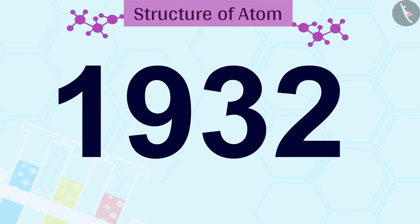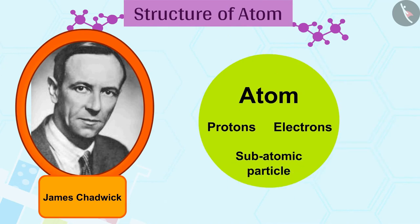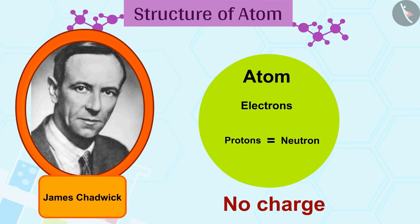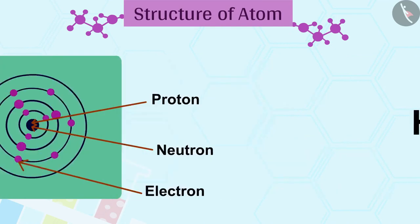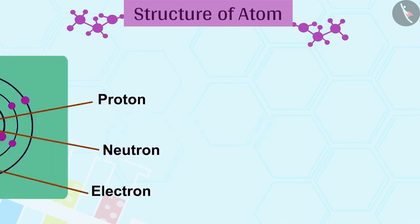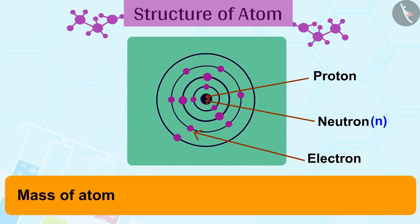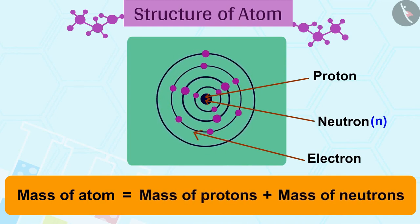In 1932, J. Chadwick discovered another subatomic particle which had no charge and a mass nearly equal to that of a proton. It was eventually named as neutron. Neutrons are present in the nucleus of all atoms except hydrogen. In general, a neutron is represented as N. The mass of an atom is therefore given by the sum of the mass of protons and the mass of neutrons present in the nucleus.